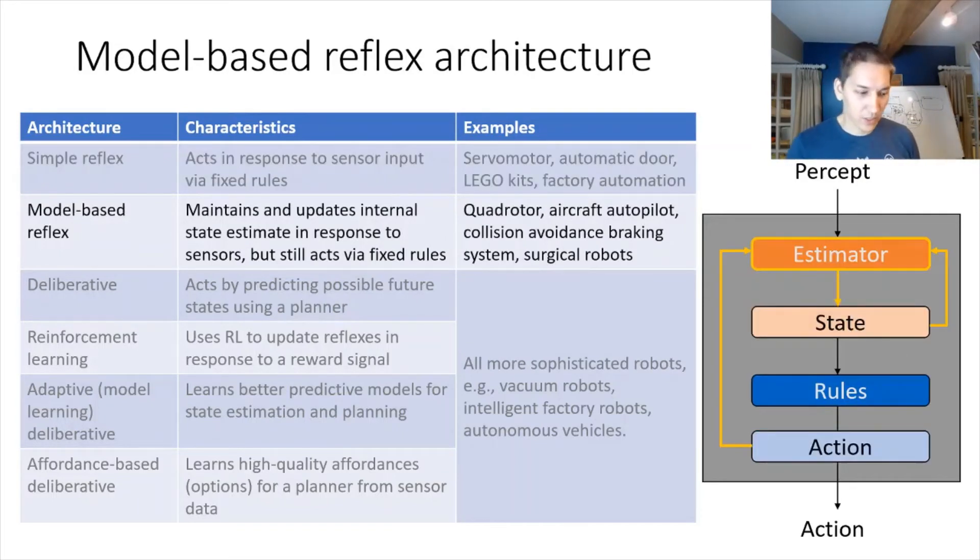Slightly more complex than this is a model-based reflex controller. The big difference here is that it encodes a bit of memory into the system. Here it has this state estimate, so it tries to understand a bit of what is happening in the world through this estimator and some memory. You can do some more sophisticated tasks like quadrotor station keeping or path tracking, aircraft autopilots, collision avoidance braking systems. They still have simple rules to generate the actions, but they do a bit of memory to try to understand what's going on in the world.